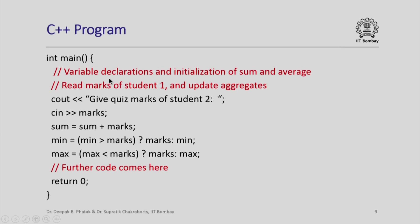After reading the first student's marks and updating the aggregates, we do the same for the second student: ask for quiz marks, read in the marks, update sum as the running sum accumulating all students' marks. For min and max we use conditional expressions: if the current value of min is greater than the marks just read, we set min to marks; otherwise min stays unchanged. Similarly for max: if current max is less than the marks just read, we update max to marks; otherwise max retains its value.